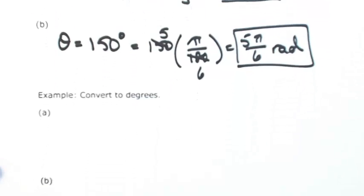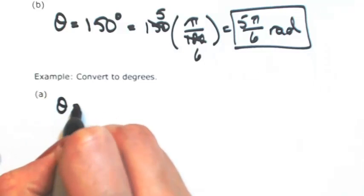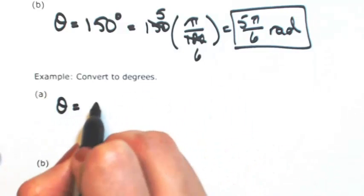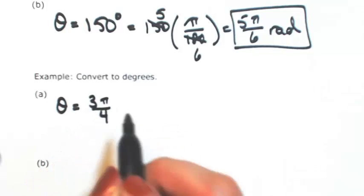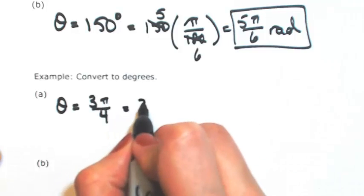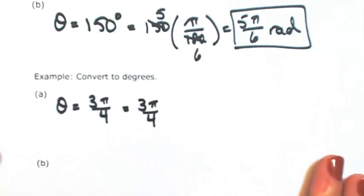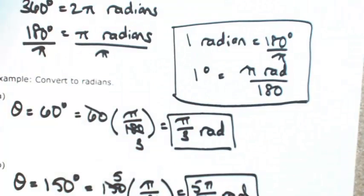Let's go the other way. Let me give you something in radians, going to degrees. So let's say that theta is 3 pi over 4. Now again, there's nothing written here. We assume it to be radians, and that's what I'm going to do. So 1 radian is the same thing as 180 degrees divided by pi.